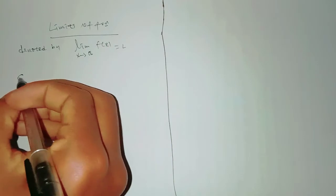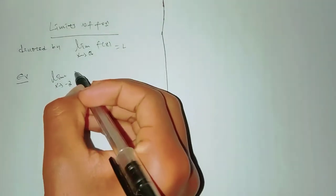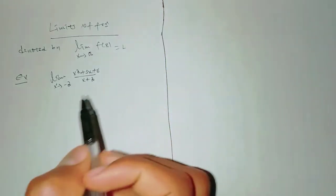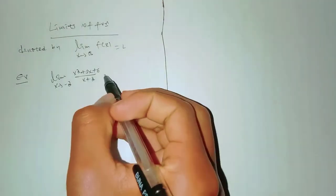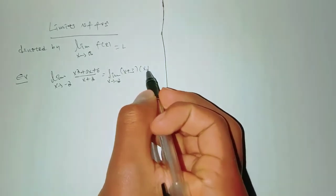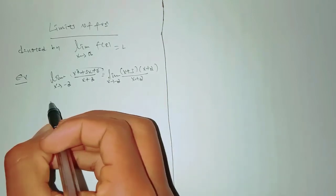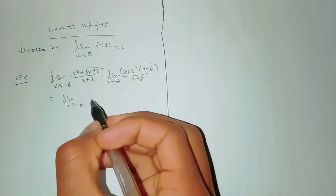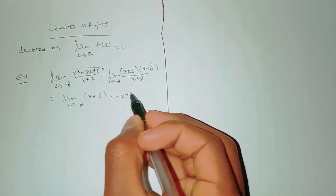Example: limit x approaches negative 2 of (x² + 5x + 6) over (x + 2). We simplify by factoring the numerator: limit x approaches negative 2 of (x + 3)(x + 2) over (x + 2). Canceling (x + 2), we get limit x approaches negative 2 of (x + 3), which equals negative 2 plus 3, equal to 1.